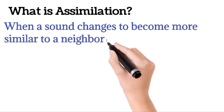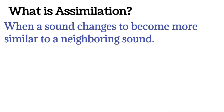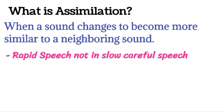Assimilation is when a sound changes to become more similar to a neighboring sound. This means that when two words come together — for example, 'that person' — but in rapid speech, we will not say 'that person' carefully; instead, we will quickly say 'thap person.' So assimilation is found in rapid speech, not in slow, careful speech.